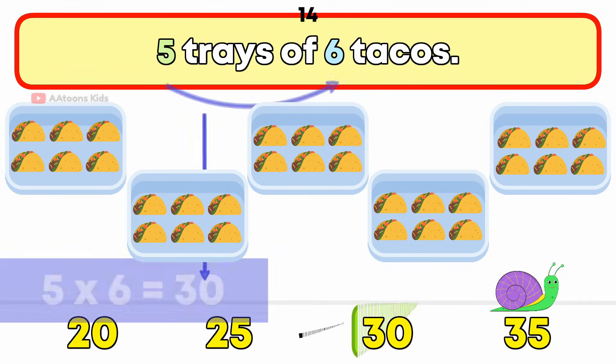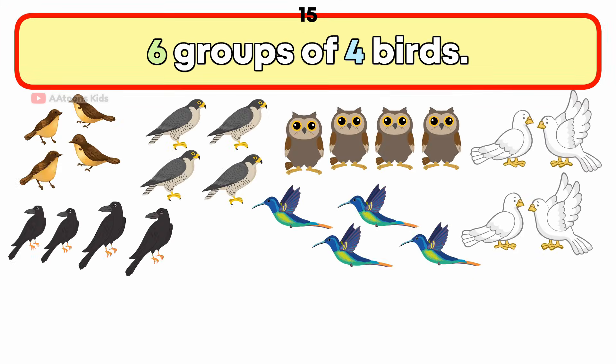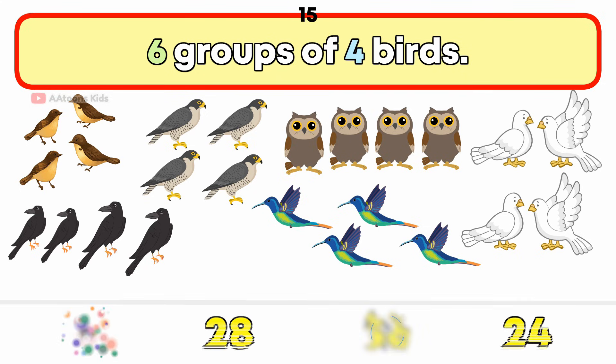6 groups of 4 birds. How many birds are there in total? 24 birds.